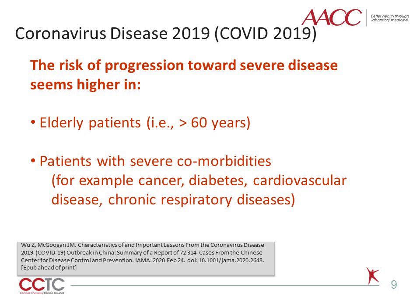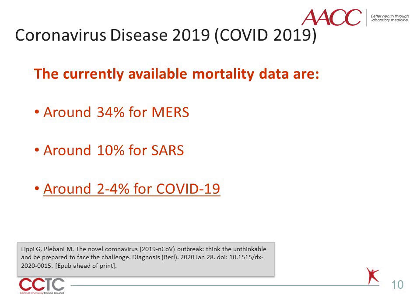According to the World Health Organization, the risk of developing a severe form of COVID-19 seems to be higher in elderly patients and in those with important comorbidities, such as diabetes, cancer, cardiovascular, and chronic respiratory diseases. Definitive data are not yet available on severity in patients with previous respiratory diseases such as asthma.